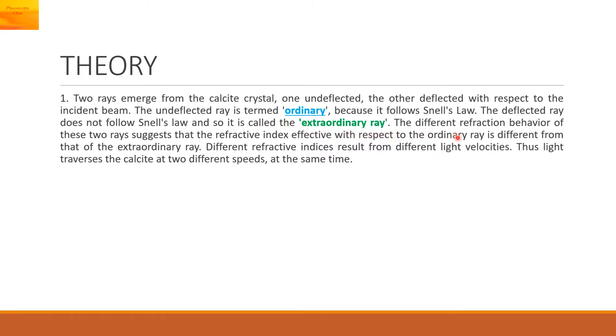The different refraction behavior of these two rays suggests that the refractive index effective with respect to the ordinary ray is different from that of the extraordinary ray. Different refractive indices result from different light velocities. Hence, light traverses the calcite crystal at two different speeds at the same time.